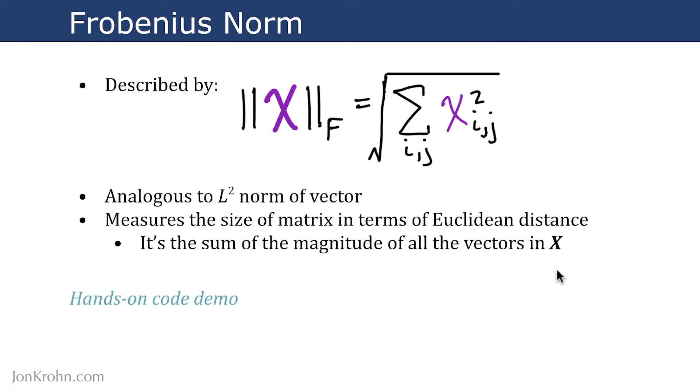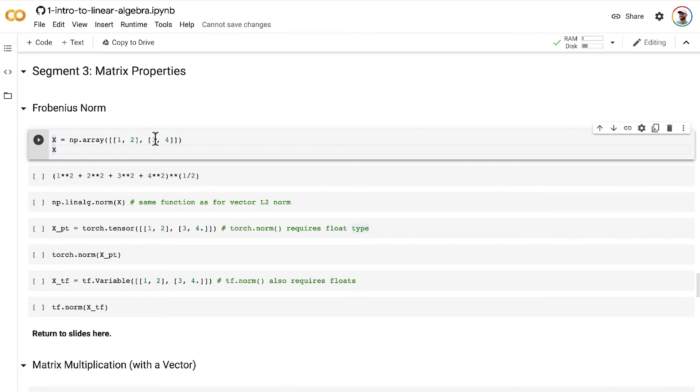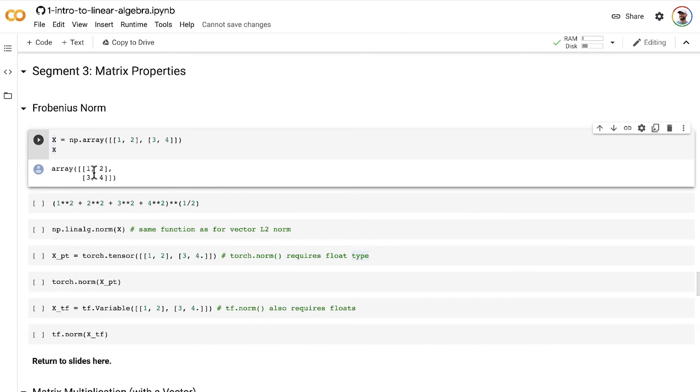Let's look at a hands-on code demo to bring all of this to life. For a simple calculation, let's use NumPy to create a new matrix with some low values in it. So here's a matrix X with just four values, 1, 2, 3, and 4, in a 2 by 2 arrangement.